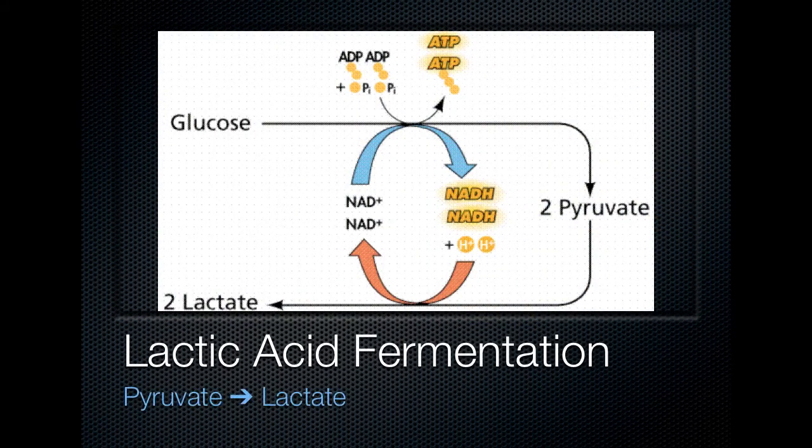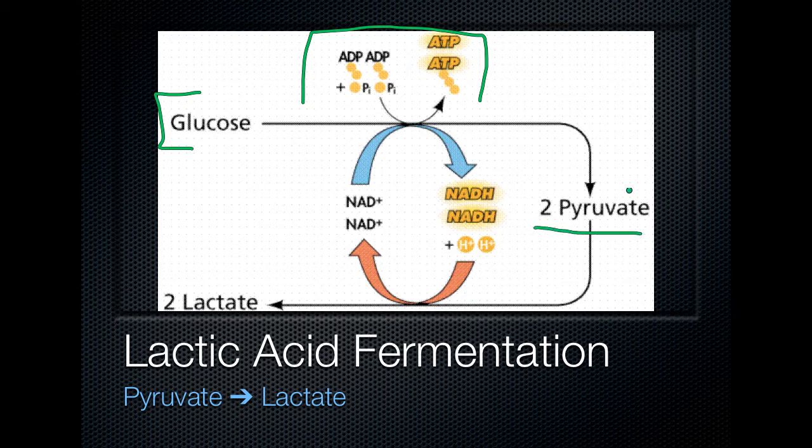Two strategies for making this happen: lactic acid fermentation and alcohol fermentation. For lactic acid fermentation, we are still putting in glucose. This piece right here is shorthand representation of glycolysis. We're still going through glycolysis, and we're getting pyruvates out the other side. This part is just like it happens aerobically. Here's where things get different. Remember that we need to regenerate NAD+. In this process of glycolysis, we made two NADH, but glycolysis will not keep running if we don't have these NAD+ to go back through it.